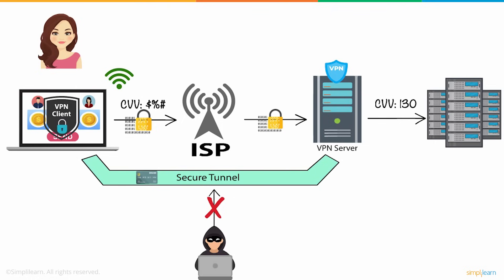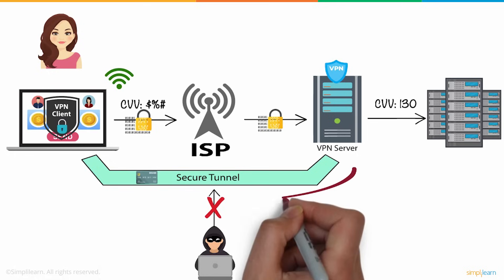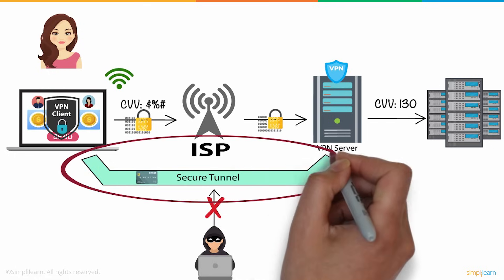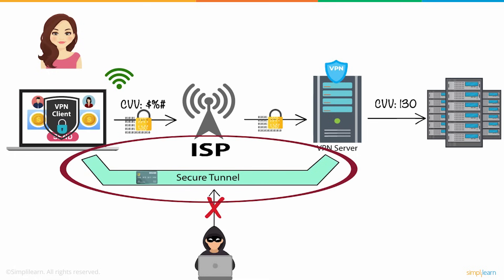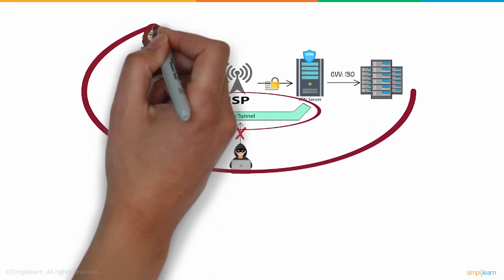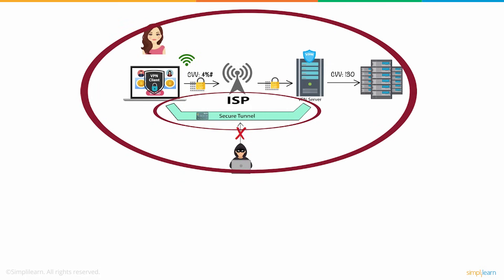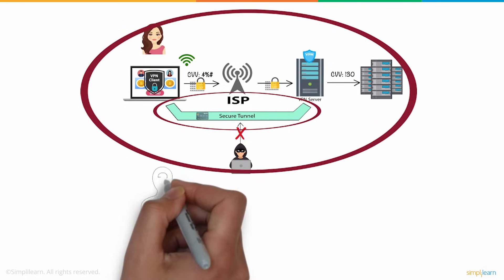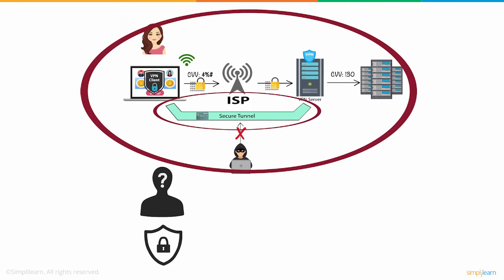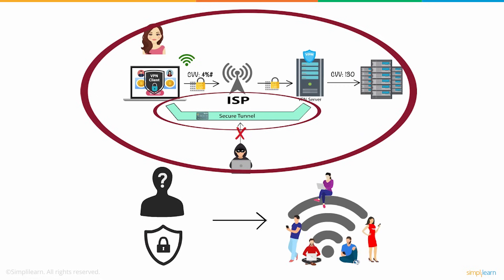Finally, the VPN server connects to Jude's bank server in the last step, where the encrypted message is decrypted. This way, Jude's original IP address is hidden by the VPN and the VPN tunnel protects her data from being hacked. This explains how a VPN makes your data anonymous and secure when it passes through the public network, and the difference between a normal connection and a VPN connection.